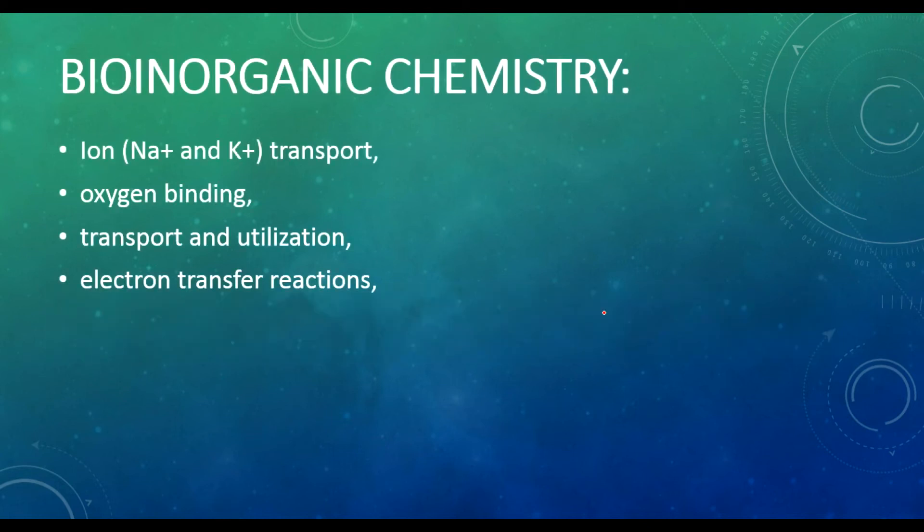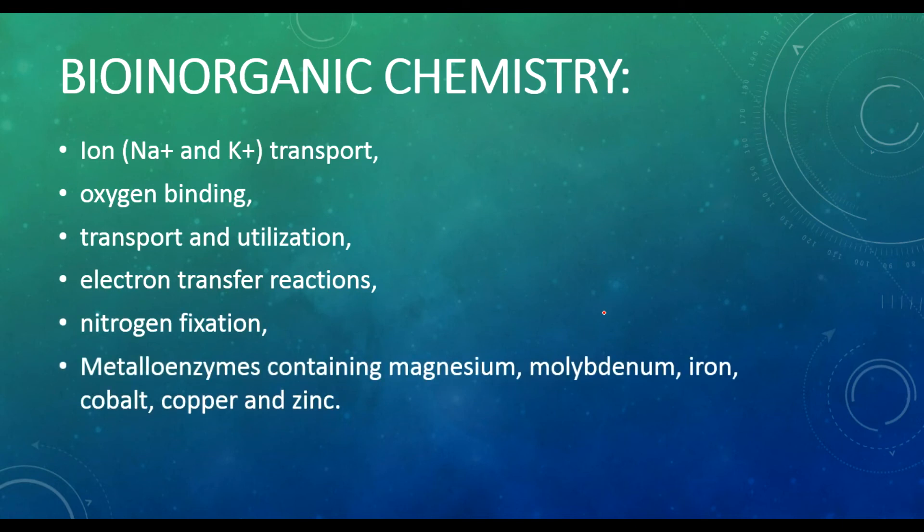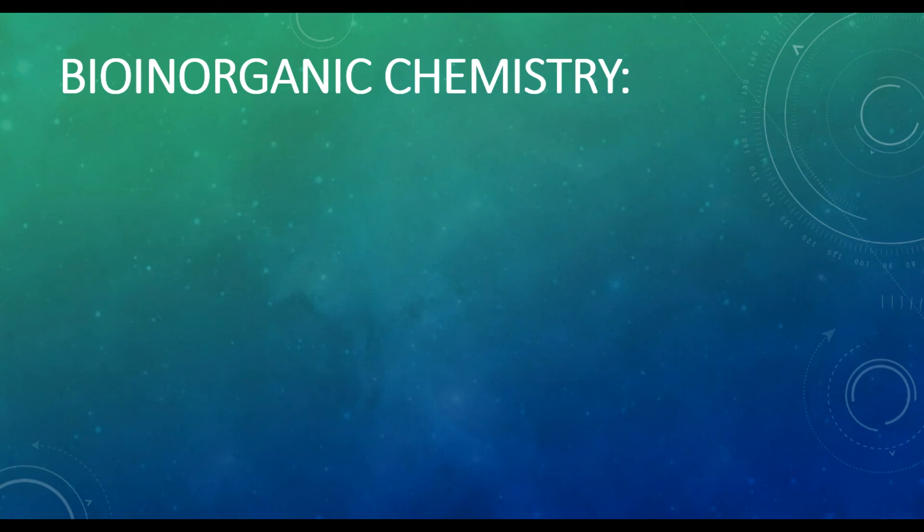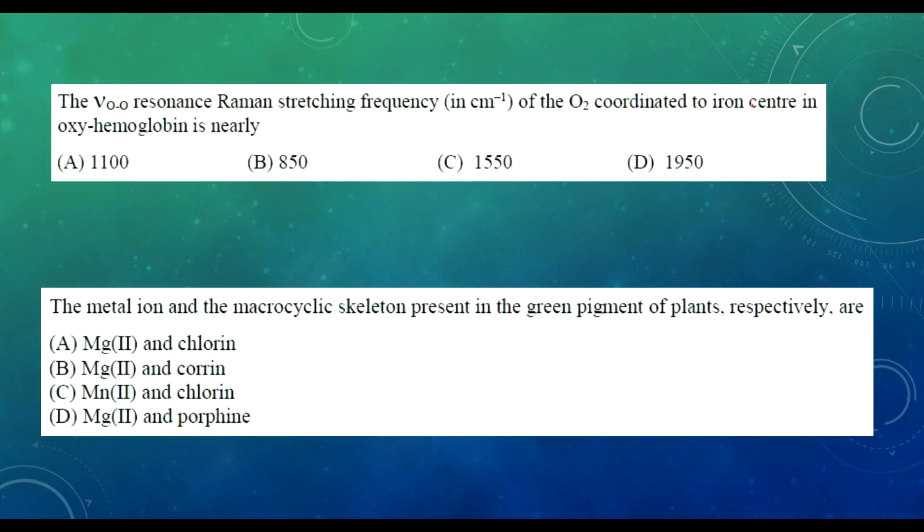This is bio-inorganic chemistry syllabus. The main important topics are hemoglobin, hemocyanin, myoglobin, and different metalloenzymes. They have asked this type of question more than twice, including in previous CSIR exams.